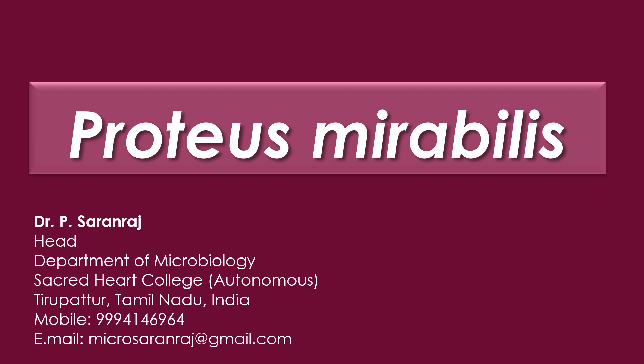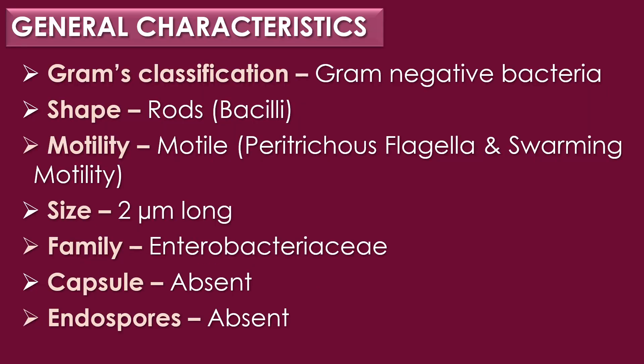Greetings. In this video we are going to see about the bacterium Proteus mirabilis. Proteus mirabilis is a gram-negative, rod-shaped bacterium that is motile due to the presence of peritrichous flagella and shows swarming motility. The size of Proteus mirabilis is 2 micrometers long and it belongs to the family Enterobacteriaceae. Capsule is absent and endospores are also absent.